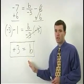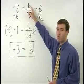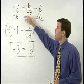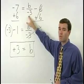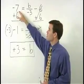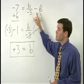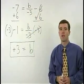And we can check our answer by plugging positive 3 back into the original equation for B. And we get negative 7 equals positive 3 over negative 3, which is negative 1 minus 6. So negative 7 equals negative 1 minus 6, which works. So we know our answer is right.